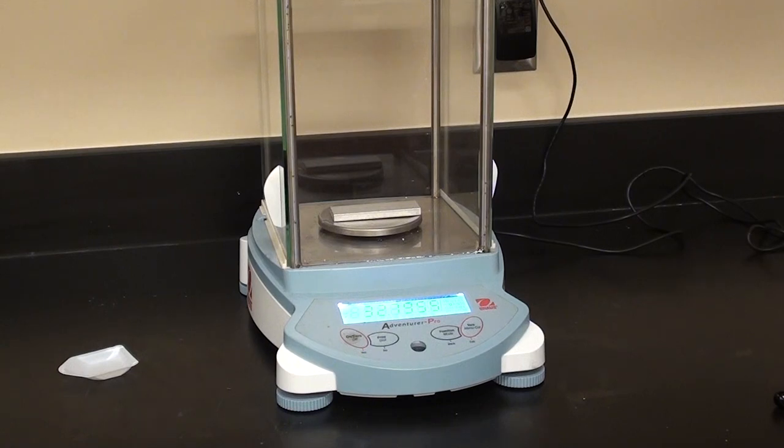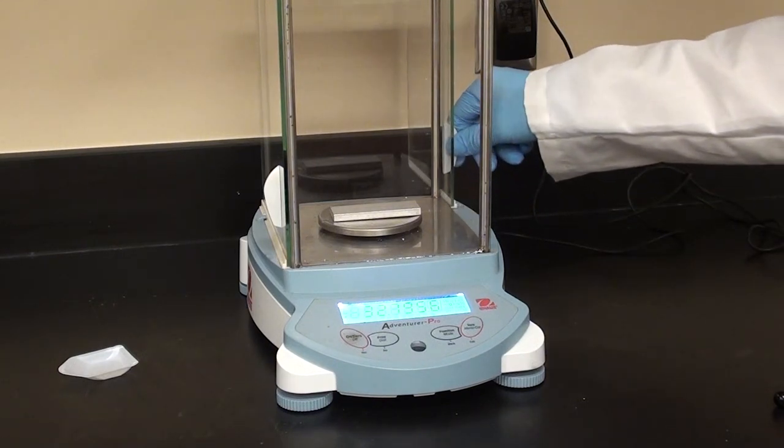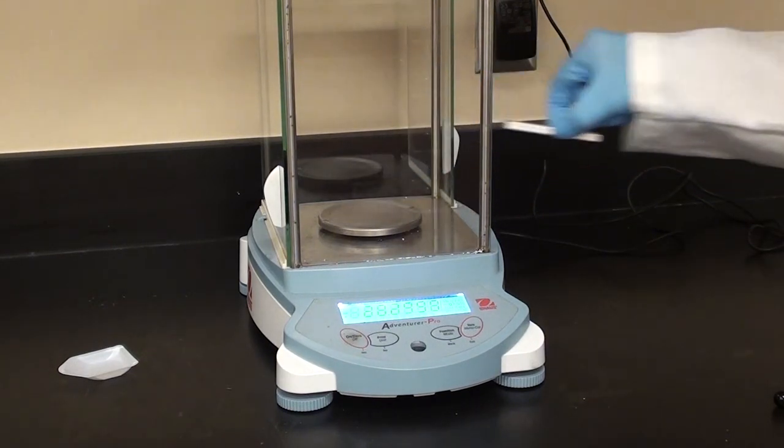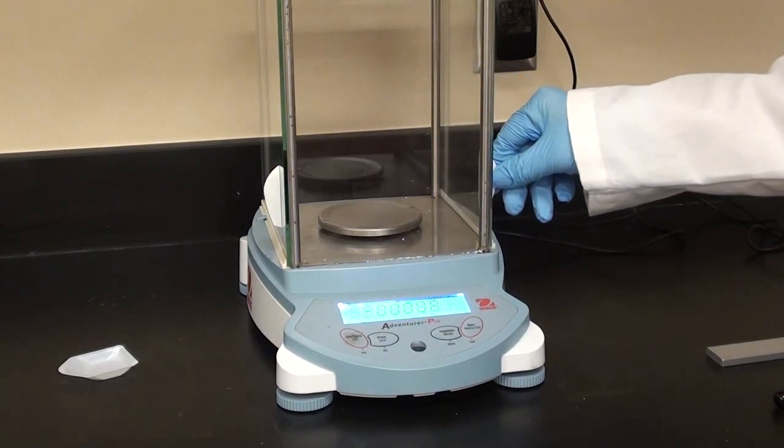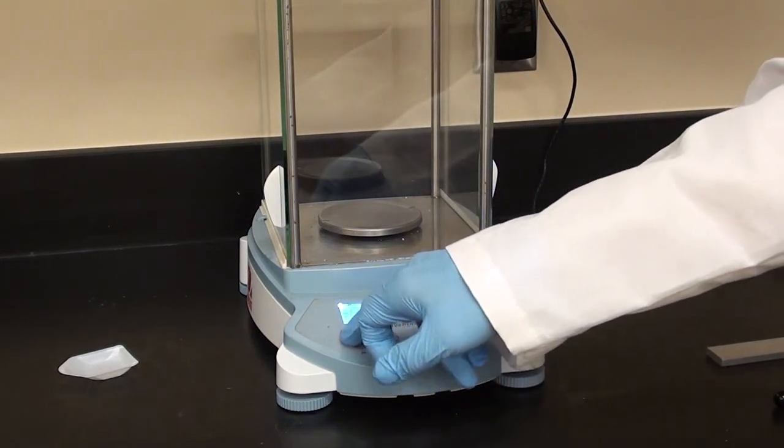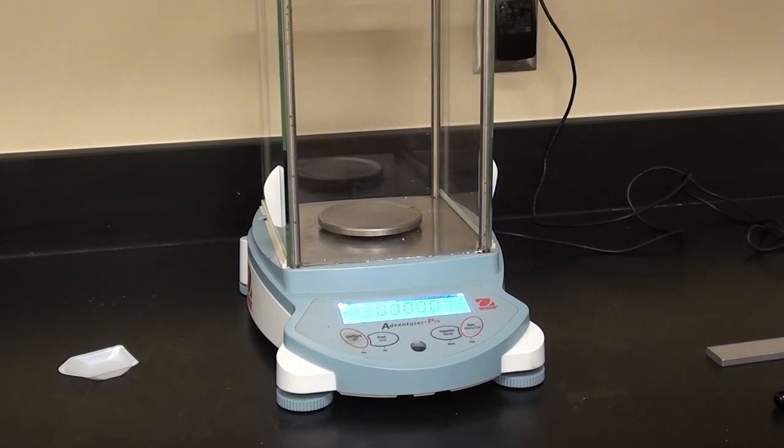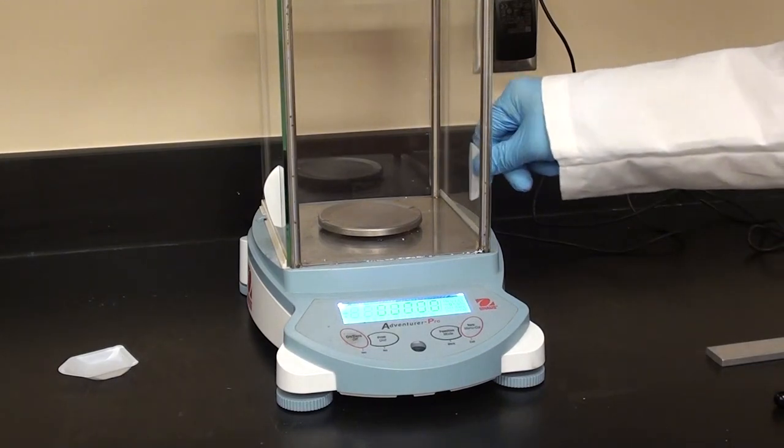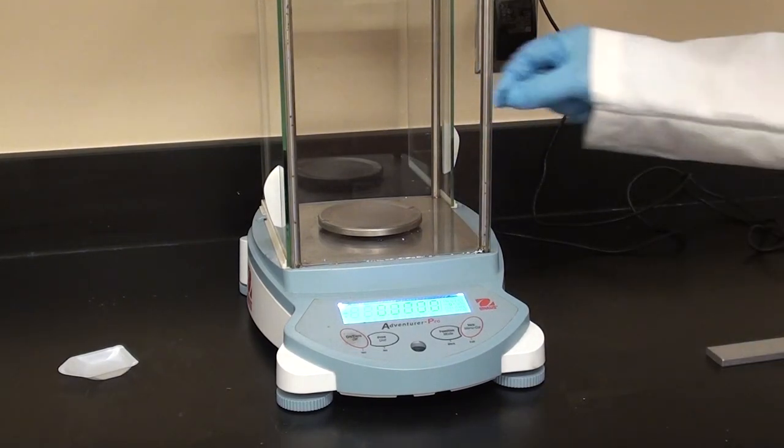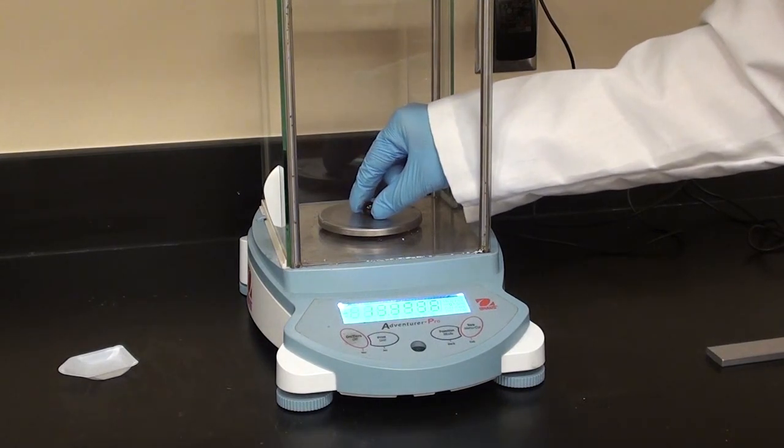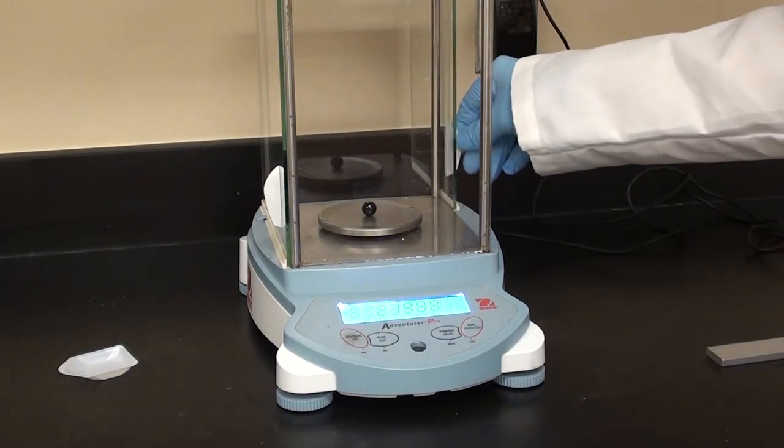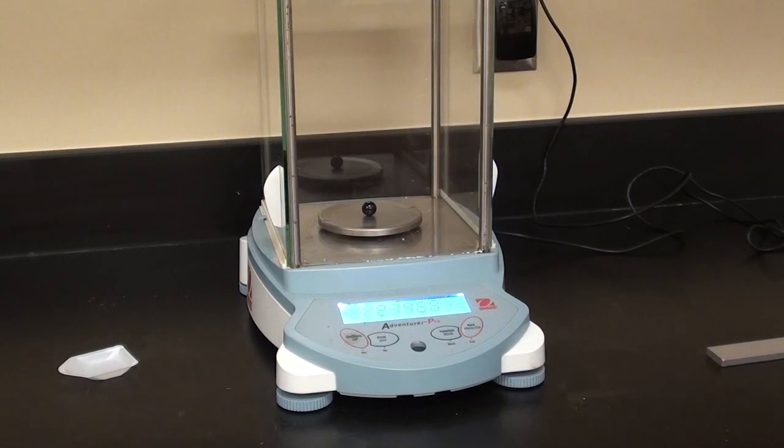Then we're going to take that off. Just to be sure we'll zero it again. Then we'll put the glass sphere on which is going to be basically a marble. And then we'll weigh that as well to all the available decimal places. If you're using an analytical balance like we are then make sure the door is closed for each measurement.